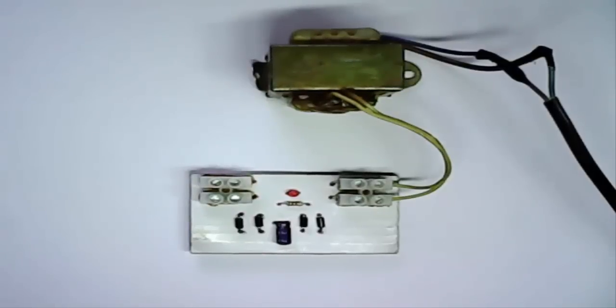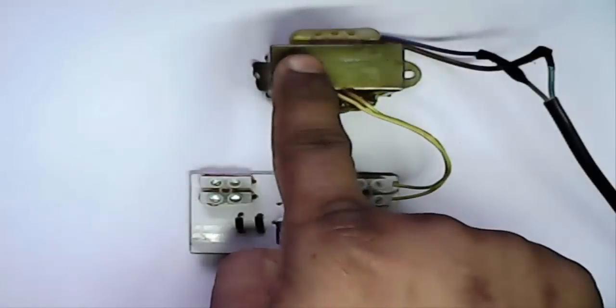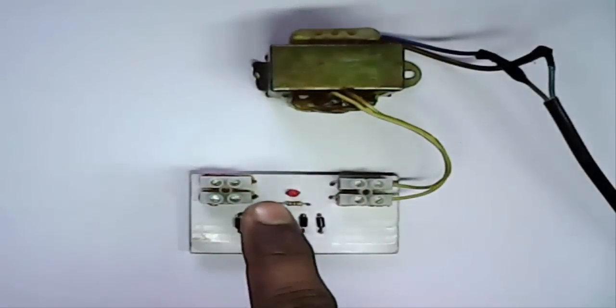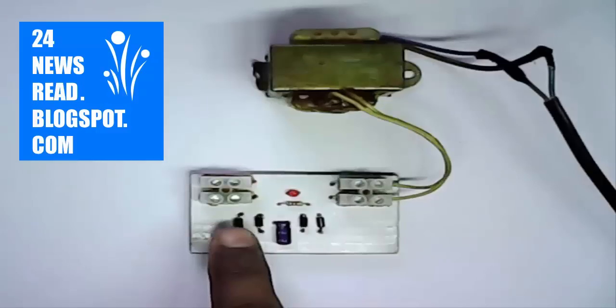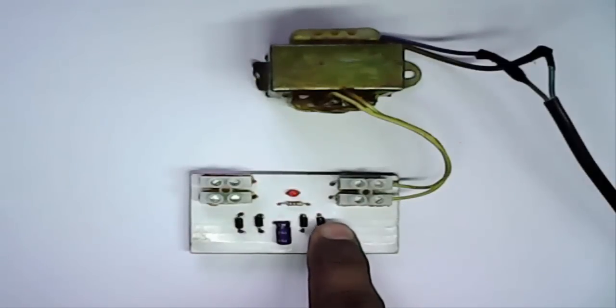See, this is our cheap price 12 volt charger. This is the transformer and this is our circuit. This is LED. This is resistor and this is diode. Capacitor and diode.